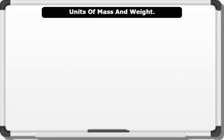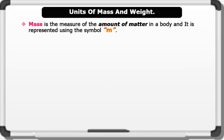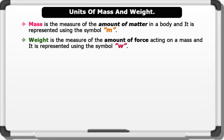Units of mass and weight. Mass is the measure of the amount of matter in a body, and it is represented using the symbol M. Weight is the measure of the amount of force acting on a mass, and it is represented using the symbol W. Mass is the same no matter where you go in the universe, but weight, on the other hand, changes from place to place.